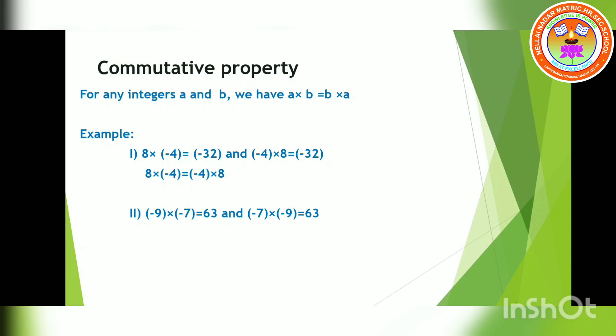Next sum: taking two negative integers — minus 9 and minus 7. Nine sevens are 63, and minus into minus becomes plus according to rule number 1. Again, reversing the order: minus 7 into minus 9 — seven nines are 63, and minus into minus becomes plus 63. So when I change the order and multiply, my answer is the same. From these examples, I prove that multiplication is commutative.